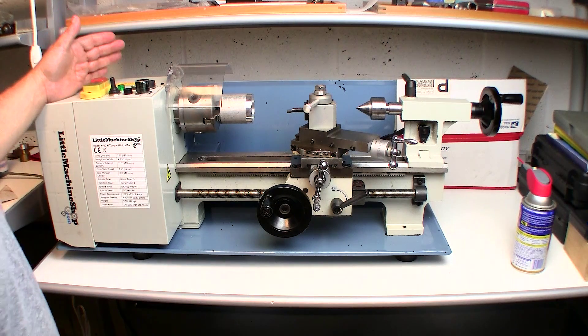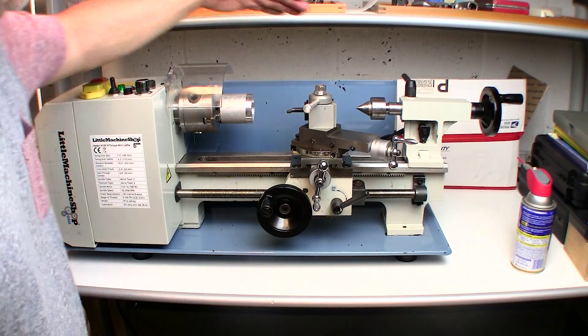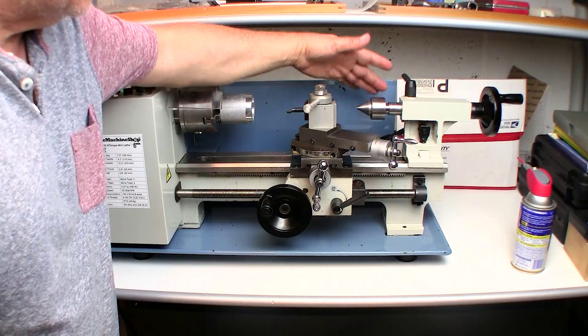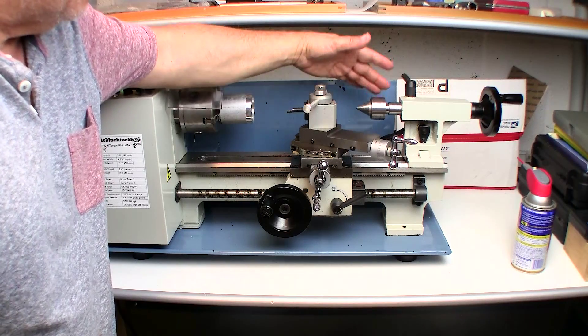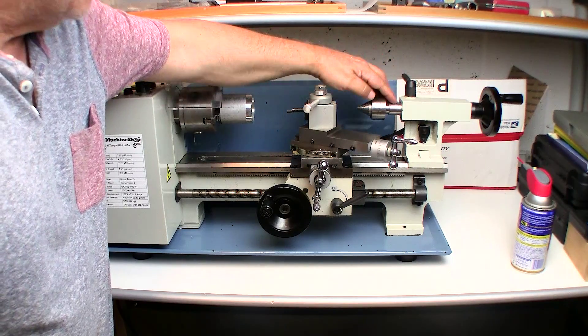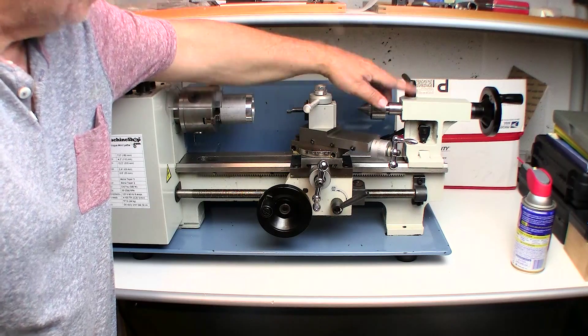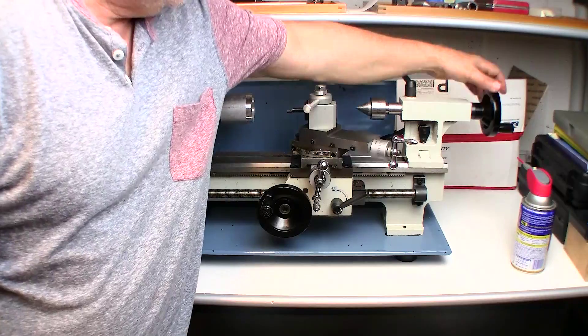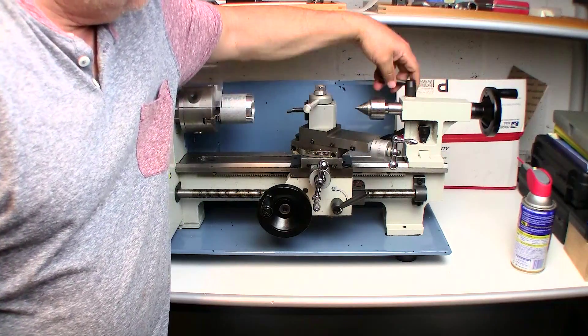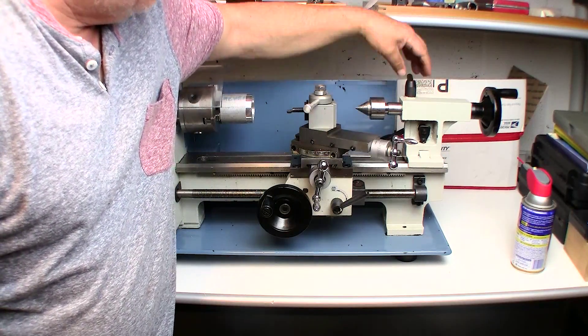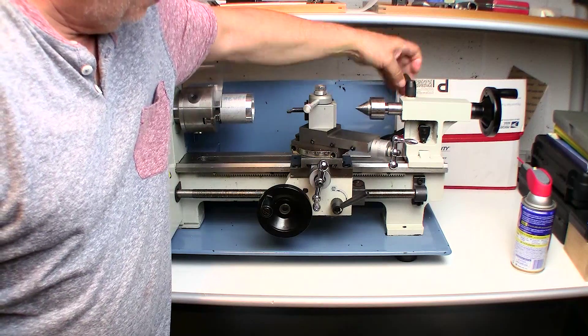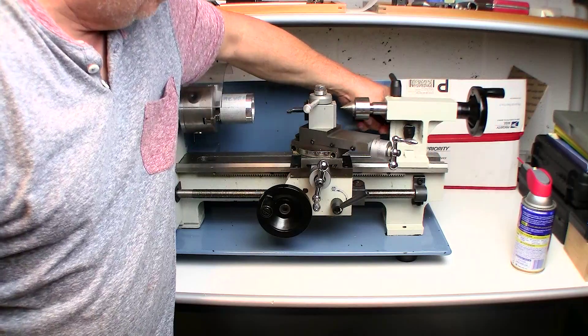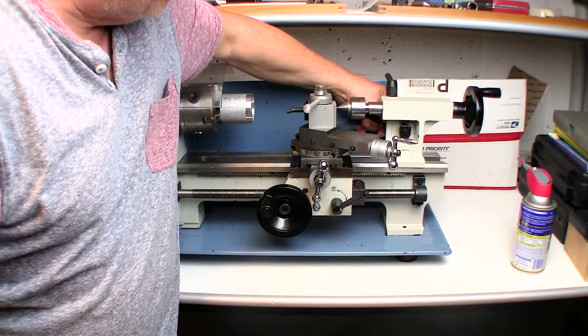Now it comes basically with this. It has your Morse taper 2 tailstock. It is a very nice freewheeling type, what they call the live center. It has a graduated spindle on the tailstock. You operate it by turning this crank. To loosen and lock it in place, you just use this lever in the rear. You have a tailstock locking lever. As you can see, it operates very, very smoothly.